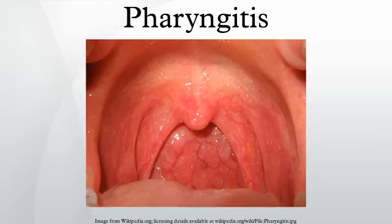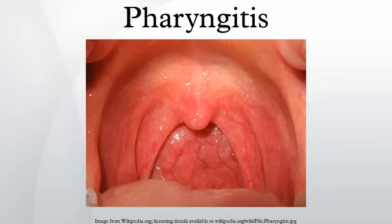Pharyngitis is a type of inflammation most commonly caused by an upper respiratory tract infection. It may be classified as acute or chronic. An acute pharyngitis may be catarrhal, purulent, or ulcerative, depending on the virulence of the causative agent and the immune capacity of the affected individual. Chronic pharyngitis is the most common otolaryngologic disease and may be catarrhal, hypertrophic, or atrophic.